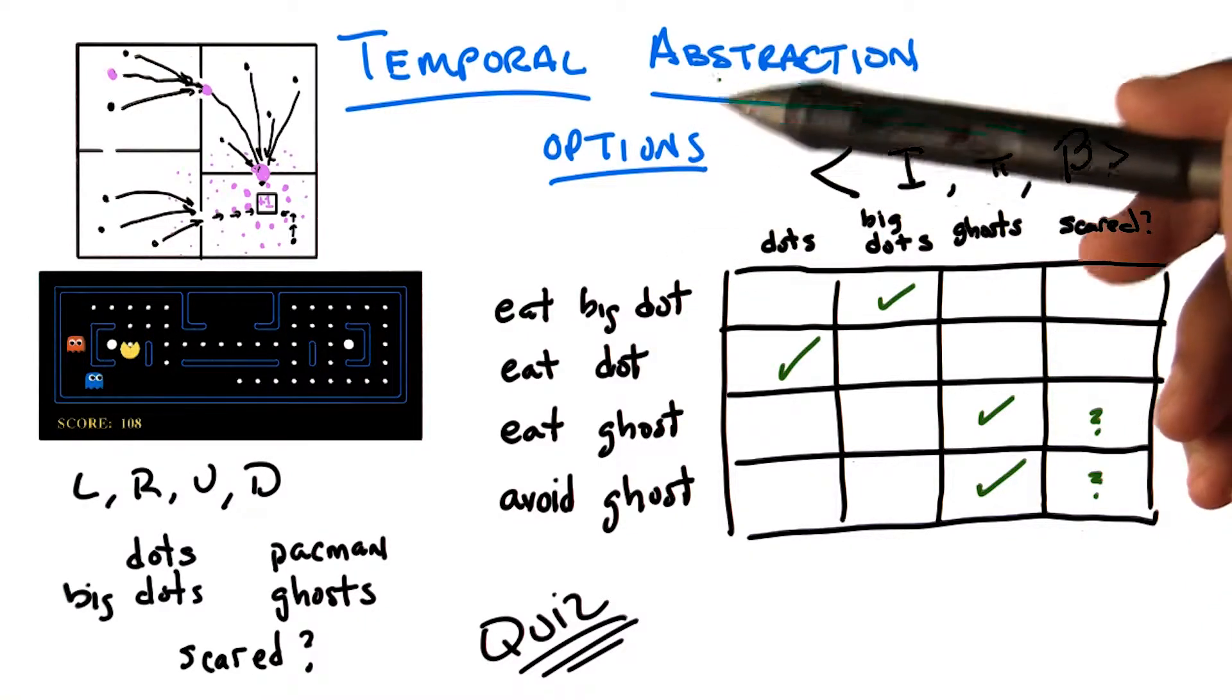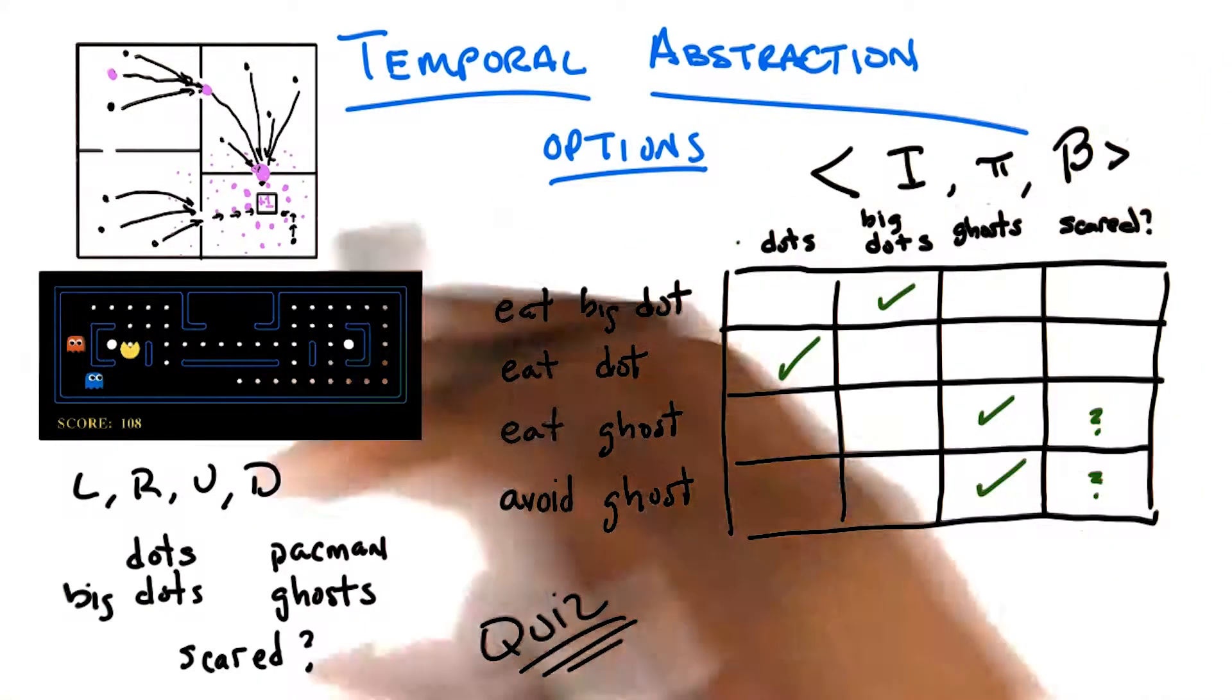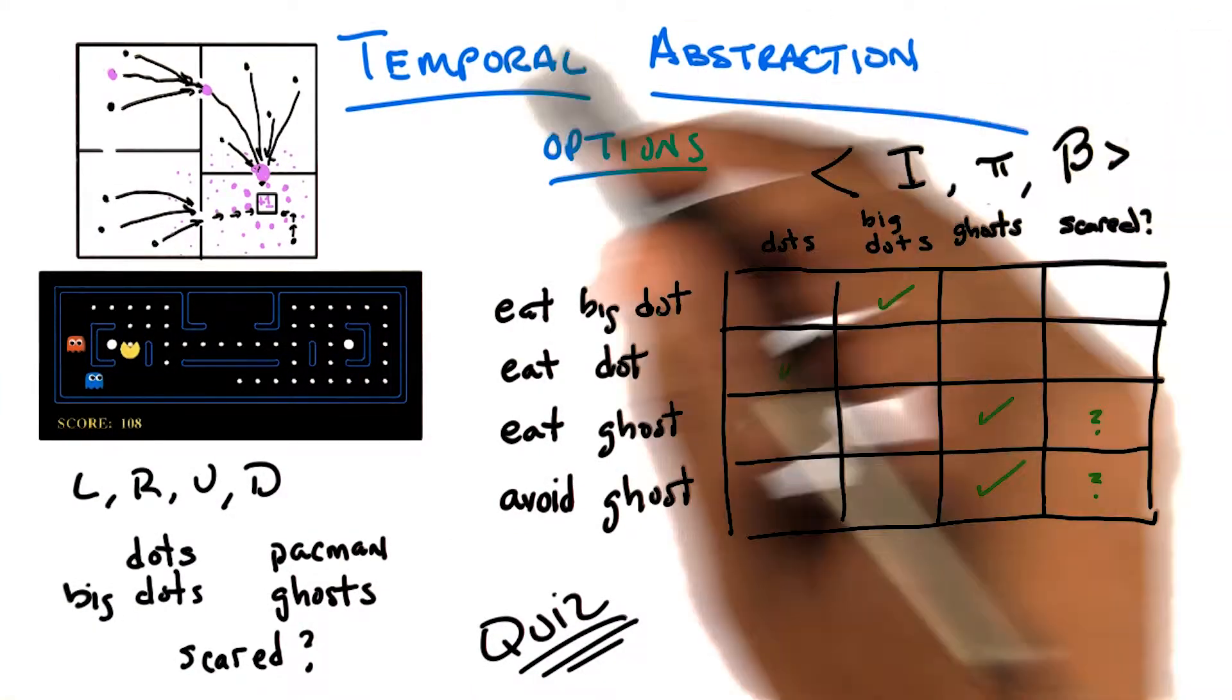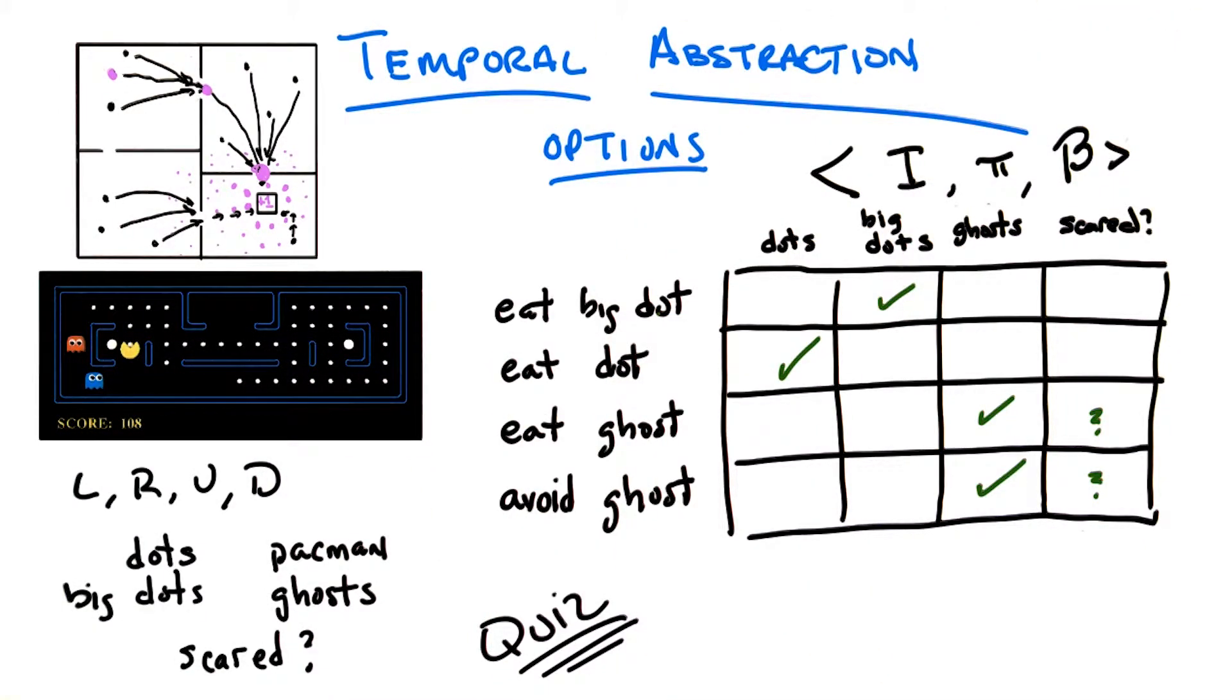The whole point of abstraction, in the software engineering and computing sense, and here where we're using it, is that in part it allows you to do an abstraction not just over time. It allows you to do state abstraction and other kinds of abstraction. So what do I mean by state abstraction here?